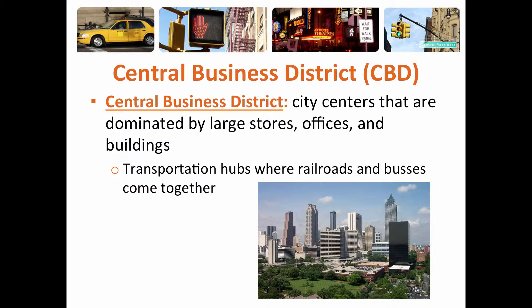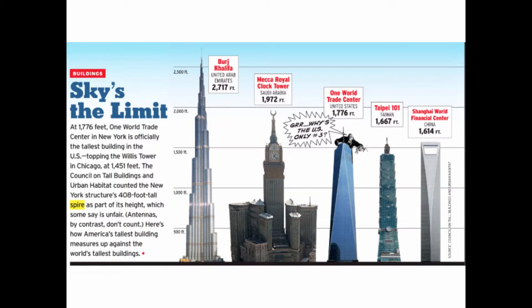Central business districts are dominated by large stores, offices, and buildings. The land in the center of the city is more expensive, so CBDs usually have skyscrapers that maximize the available space. There are also transportation hubs that meet at the CBD — railroads, buses, subways — so that people can get to the central business district, which is the heart of all cities. Here's a diagram showing some of the tallest buildings in the world, and they occur in the CBDs of all of these major cities.